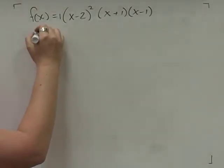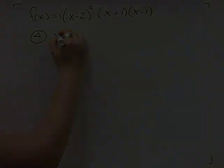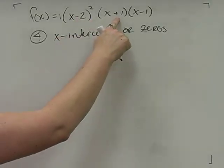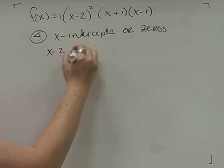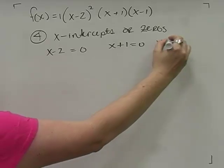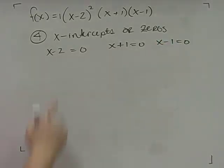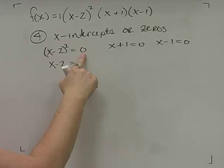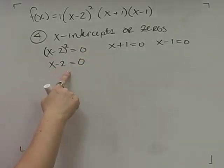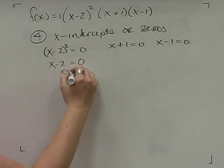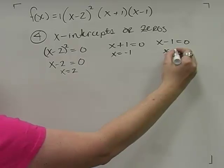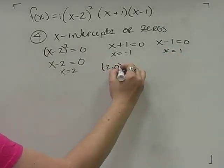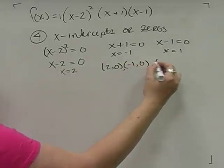Next I find the x-intercepts or zeros by setting each factor equal to 0: x minus 2 equals 0, x plus 1 equals 0, and x minus 1 equals 0. For the squared factor, taking the square root of both sides gives x minus 2 equals 0 — the exponent doesn't change the zero. So the zeros are x equals 2, x equals negative 1, and x equals 1, giving intercepts at (2, 0), (negative 1, 0), and (1, 0).